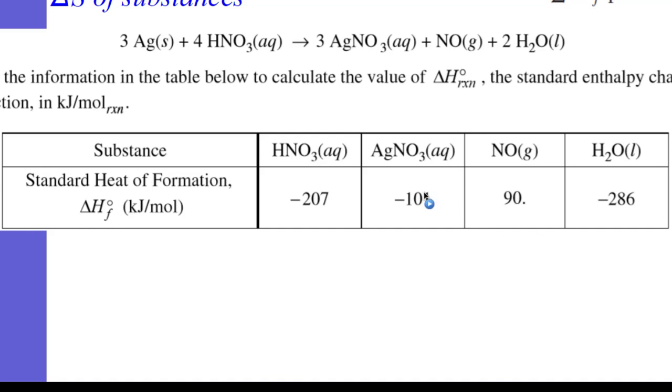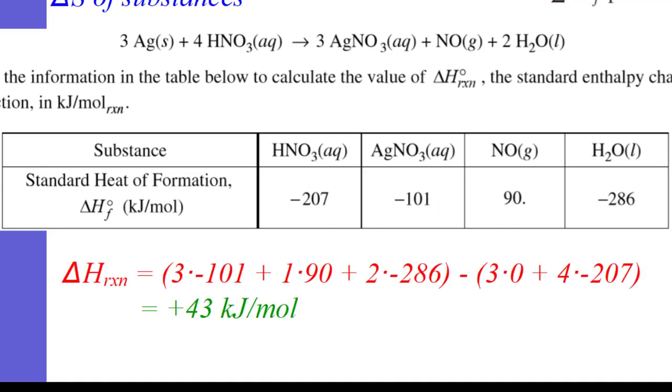And so what do we do is develop the equation. The heat of reaction equals the summation of the products. So you look at the products. The products are three times silver nitrate. One silver nitrate is negative 101 plus one mole of nitro monoxide, one times 90, plus two moles of the water. That's negative 286. Now that's the summation of the products minus the reactants.